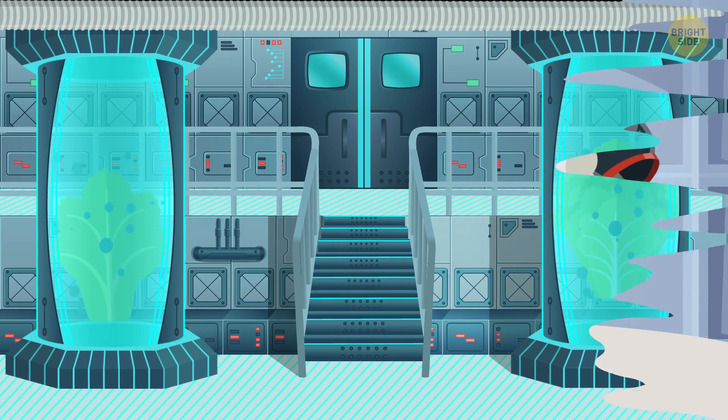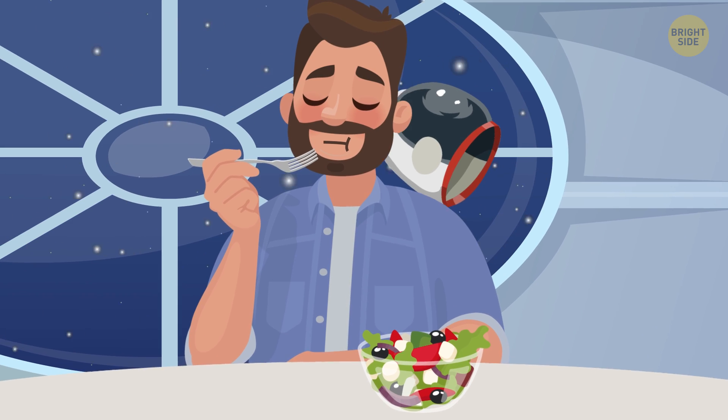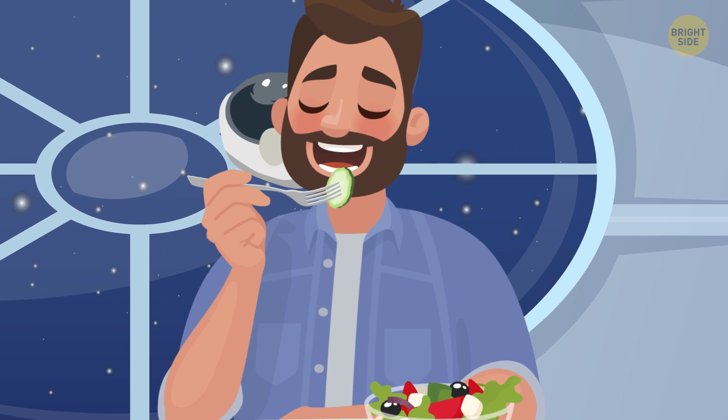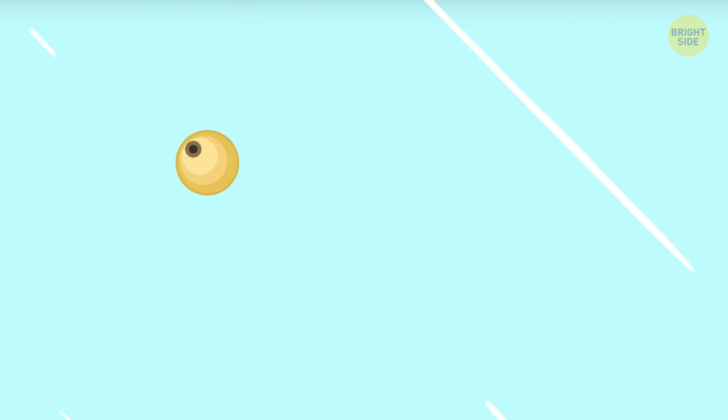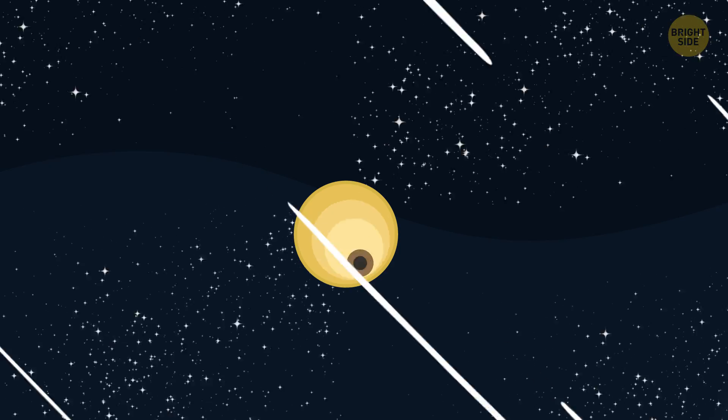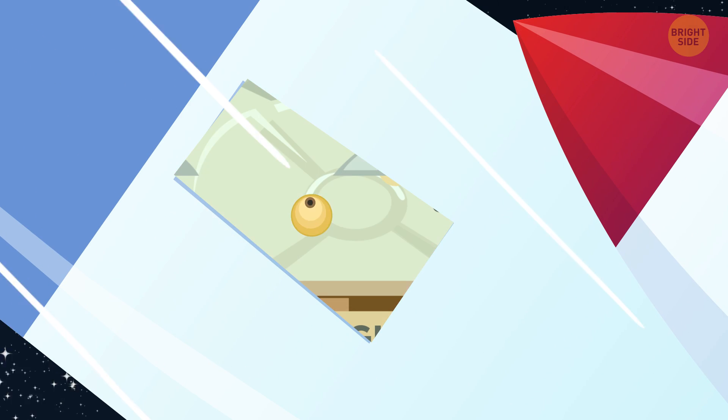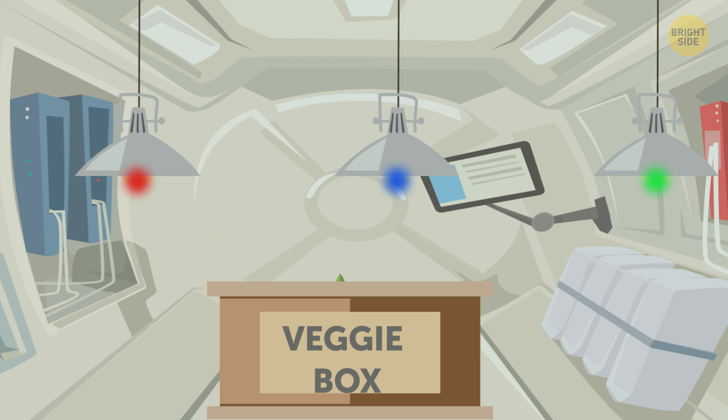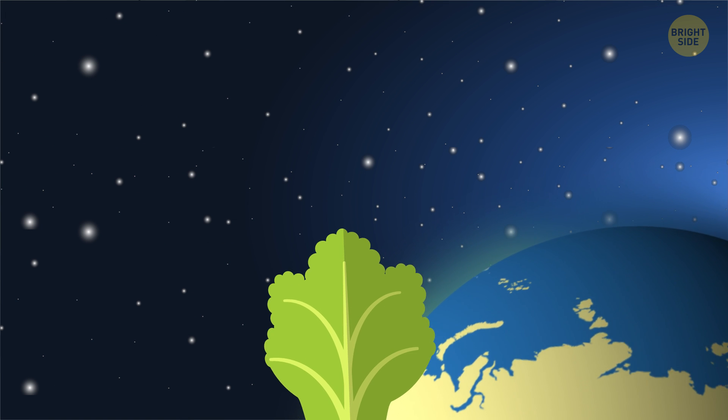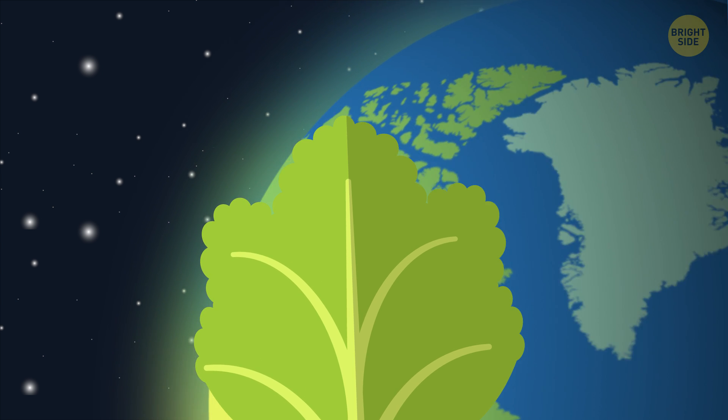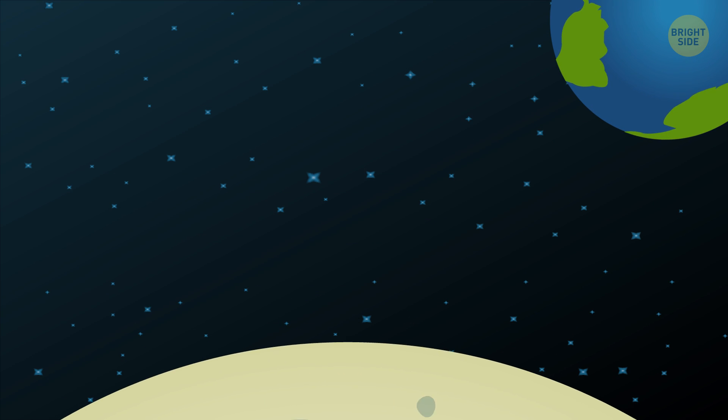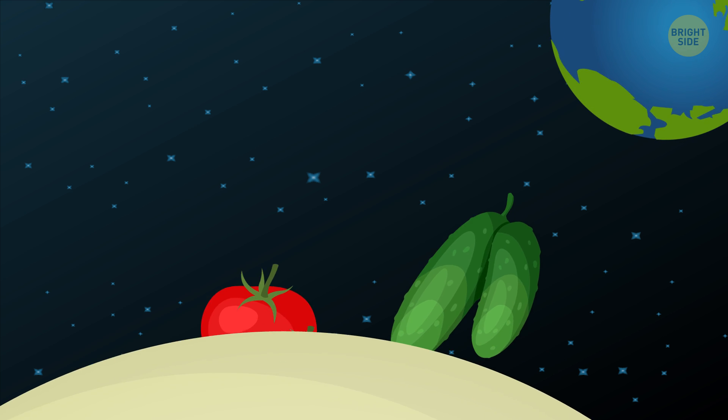In 2015, members of the 44th ISS crew ate lettuce that was fully grown on board. The seeds had been sent from Earth. Once in the station, they were put in a veggie box with red, blue, and green lamps that each provided a certain growing condition for the seeds. The experiment was successful, and the astronauts even said that the lettuce tasted exactly the same as it does on Earth. Their next crop idea? Tomatoes and cucumbers to go with that space salad.